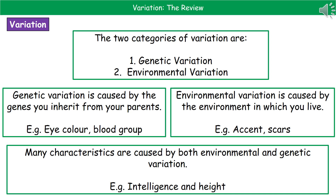One thing to bear in mind on questions about causes of variation is that it's all good and fine talking about genetic and environmental, but don't forget that a great number of characteristics are influenced by both. Things like your intelligence and your height are really good examples — your genes give you a certain element, but the environment will then add to that, for example if you never eat enough protein. This can come up as a six-marker, so make sure you talk about genetic with an example, environmental with an example, and then characteristics caused by both genes and environment with an example.